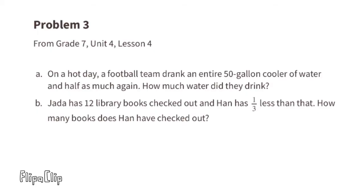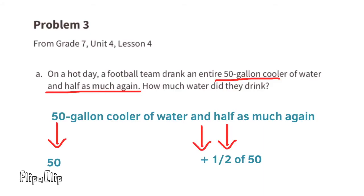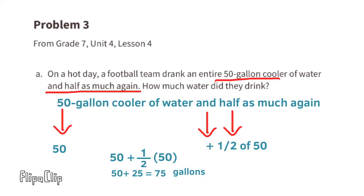Problem number three, from seventh grade Unit 4, Lesson 4, part a: On a hot day, a football team drank an entire 50-gallon cooler of water and half as much again. How much water did they drink? The information tells us that they drank 50 gallons of water and half of 50 gallons of water. So 50 gallons of water is 50 plus half of 50, which is 25. 50 gallons plus 25 gallons is 75 gallons of water. The football team drank 75 gallons of water.